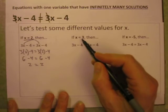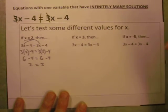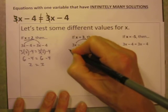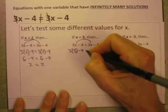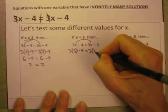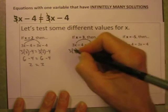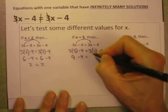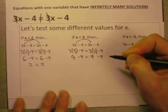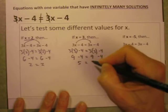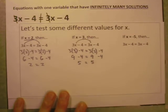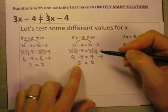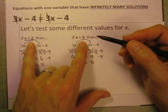Are both sides of the equation the same when X equals 3? It's kind of looking that way. If I substitute 3 in for X on both sides, I've got 3 times 3 minus 4 and 3 times 3 minus 4. 3 times 3 is 9 minus 4, and 9 minus 4 is 5. When X equals 3, both sides of the equation are 5. So yes, this is a true equation whether X is 2 or 3.